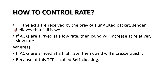How to control the rate: as long as ACKs are received for previously unacknowledged packets, the sender believes all is well. If ACKs arrive at a low rate, CWND will increase at a relatively slow rate. If ACKs are arriving at a favorable rate with no timeout, it indicates the need to increase the congestion window.